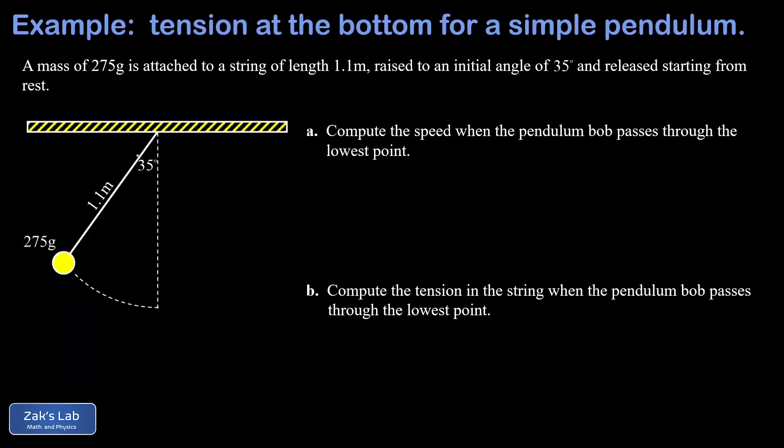In this problem, we're looking at a simple pendulum that starts from some known initial angle. We're given the length of the string, and we're given the mass of the pendulum bob. In part A, we want to get the speed at the lowest point, and in part B, we want to get the tension in the string at that lowest point.